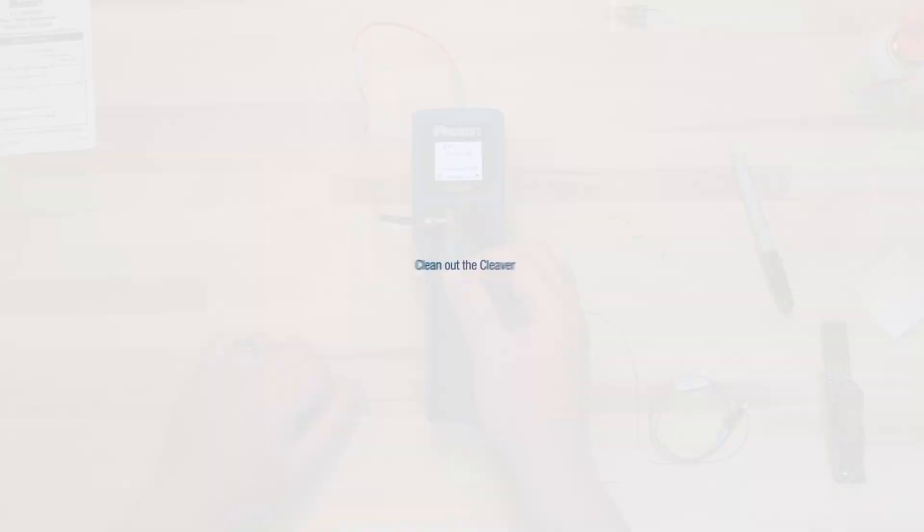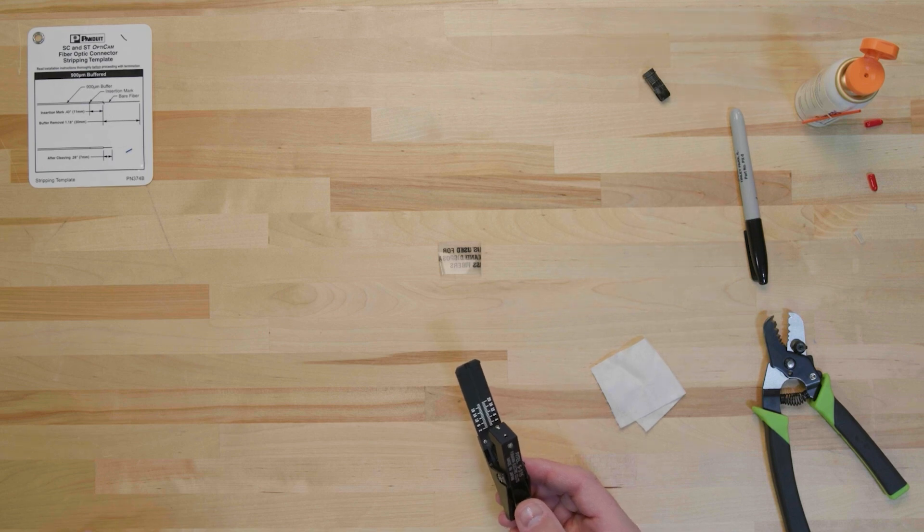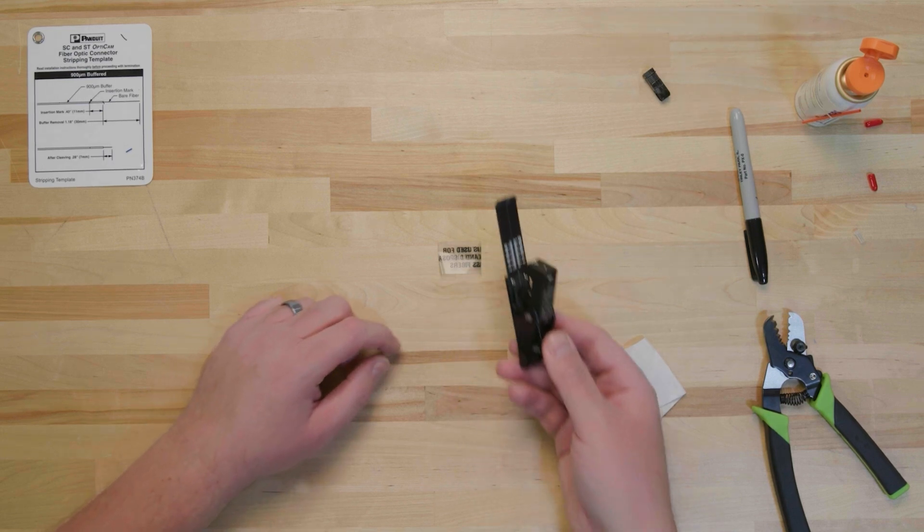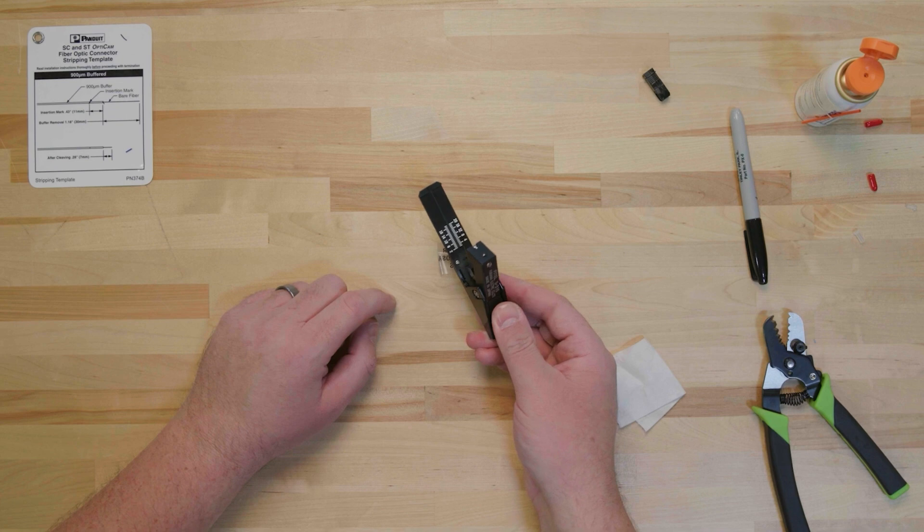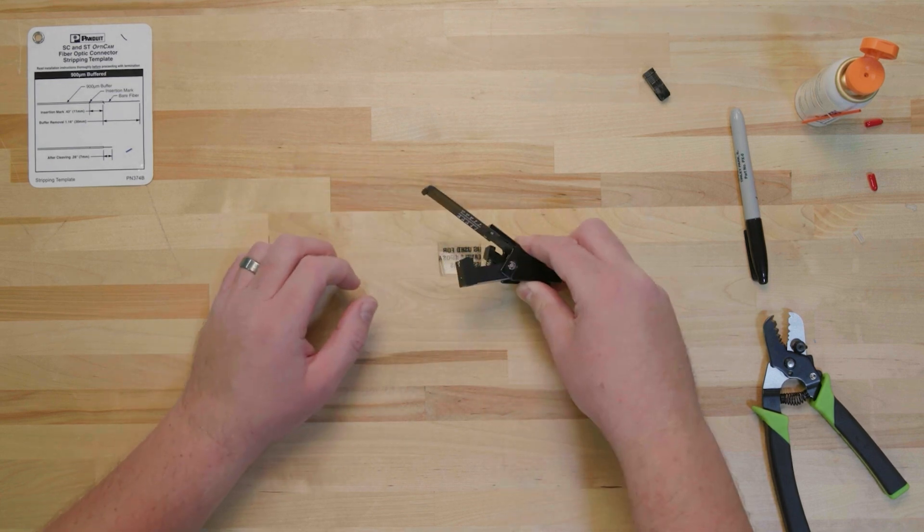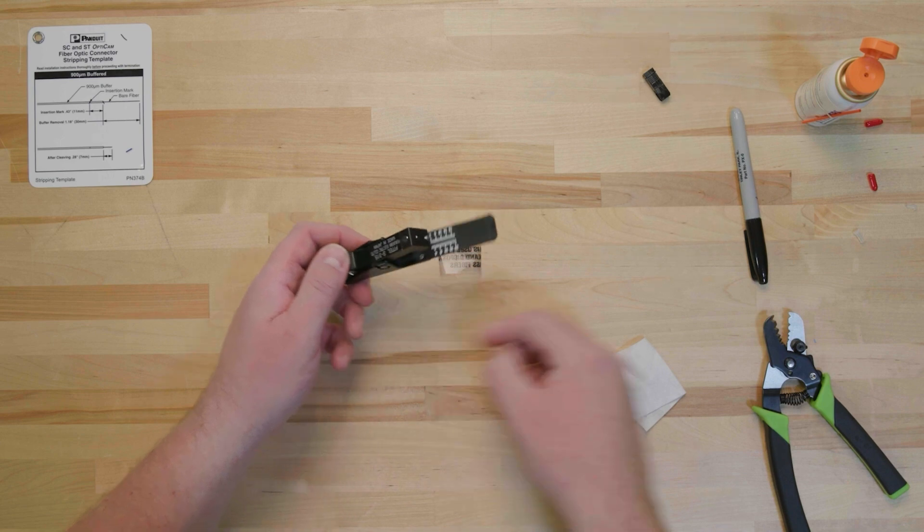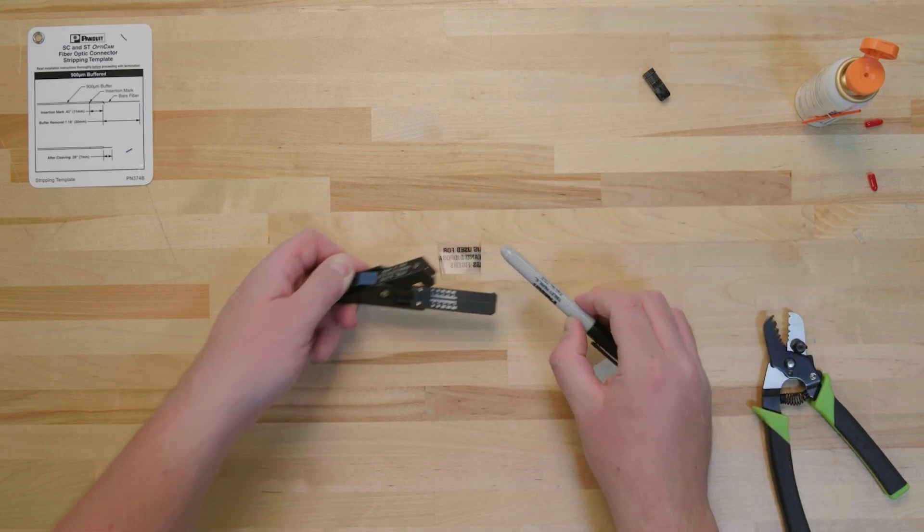The last step is to clean out the FJQ-CVR manual cleaver. After the fiber has been cleaved, the remaining broken shard of fiber will still be under the grip of the cleave tool. Hold the cleave tool over the tape very carefully and depress the grip, allowing the shard to fall onto the tape. If the shard does not fall, do not use your fingers. Use a tool to push the fiber shard onto the tape.